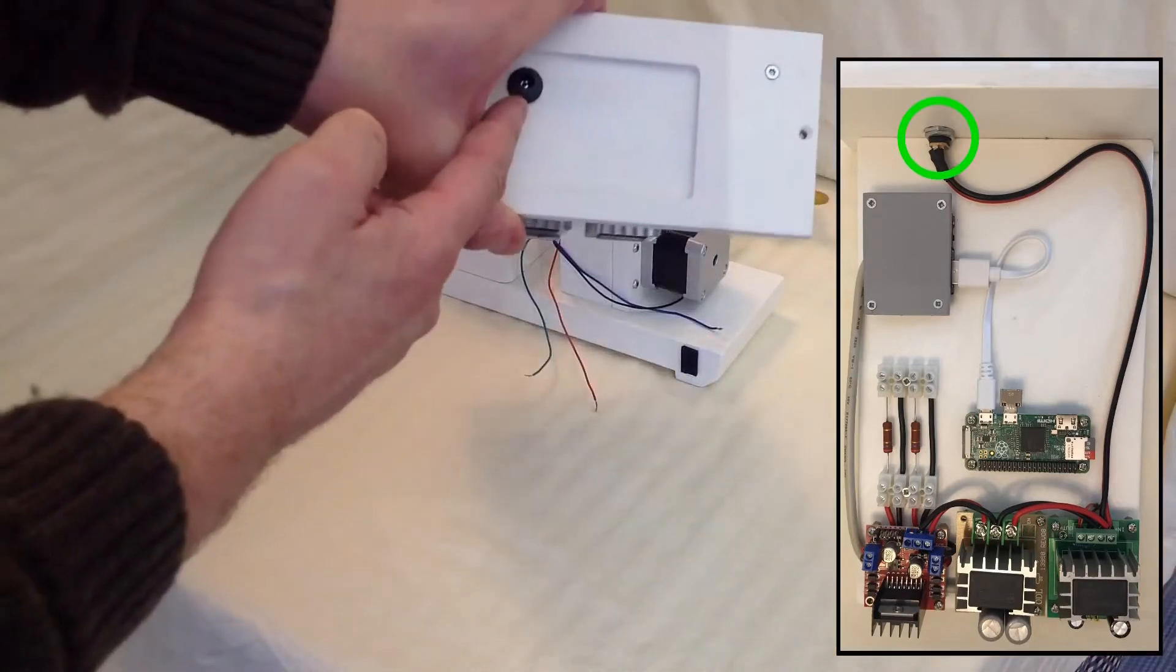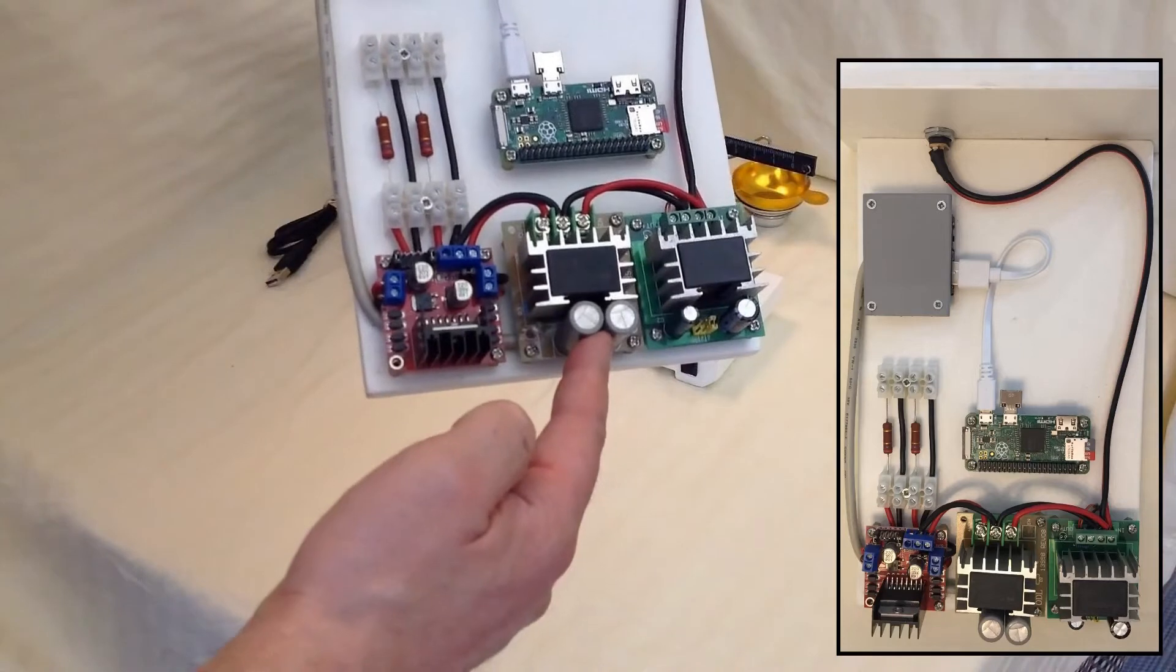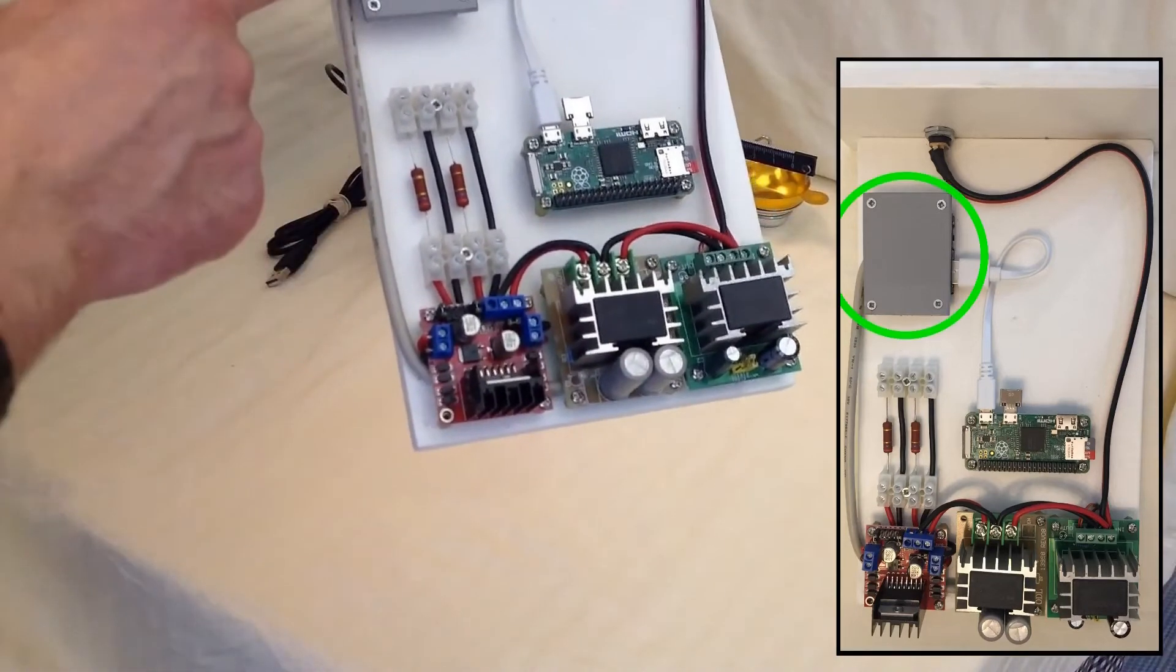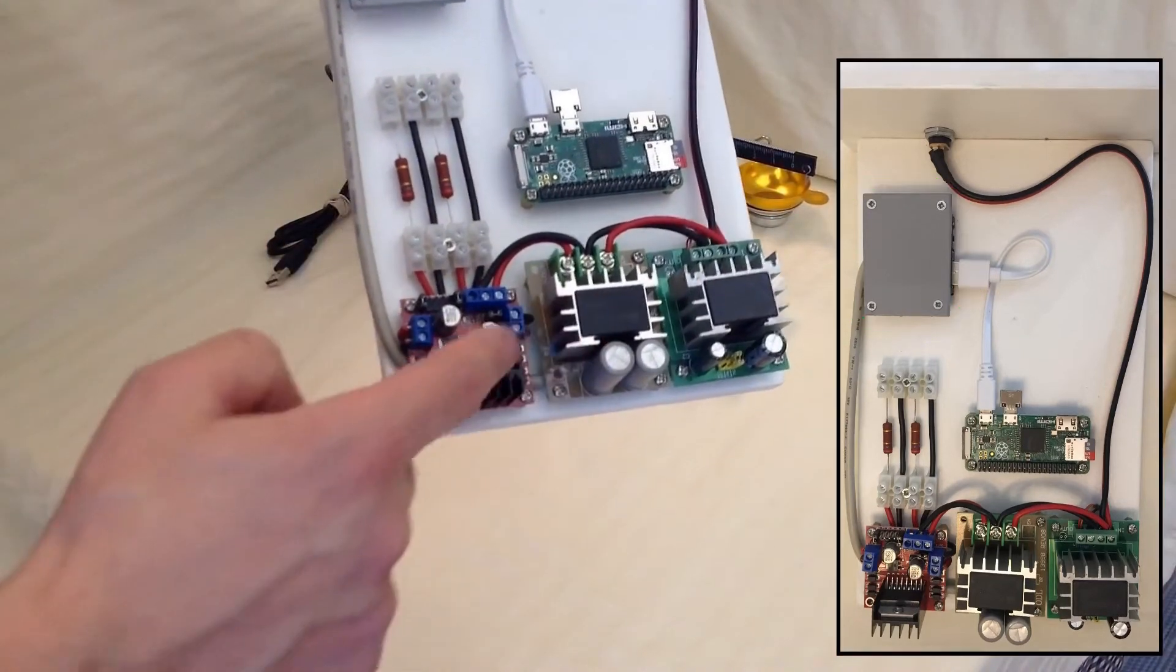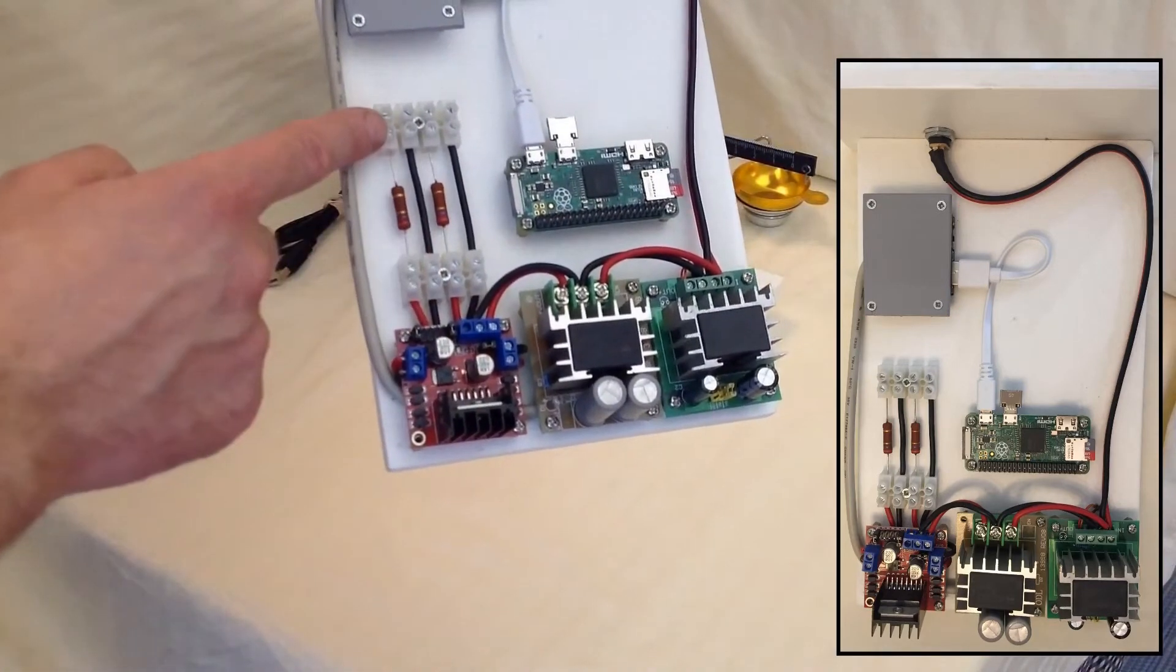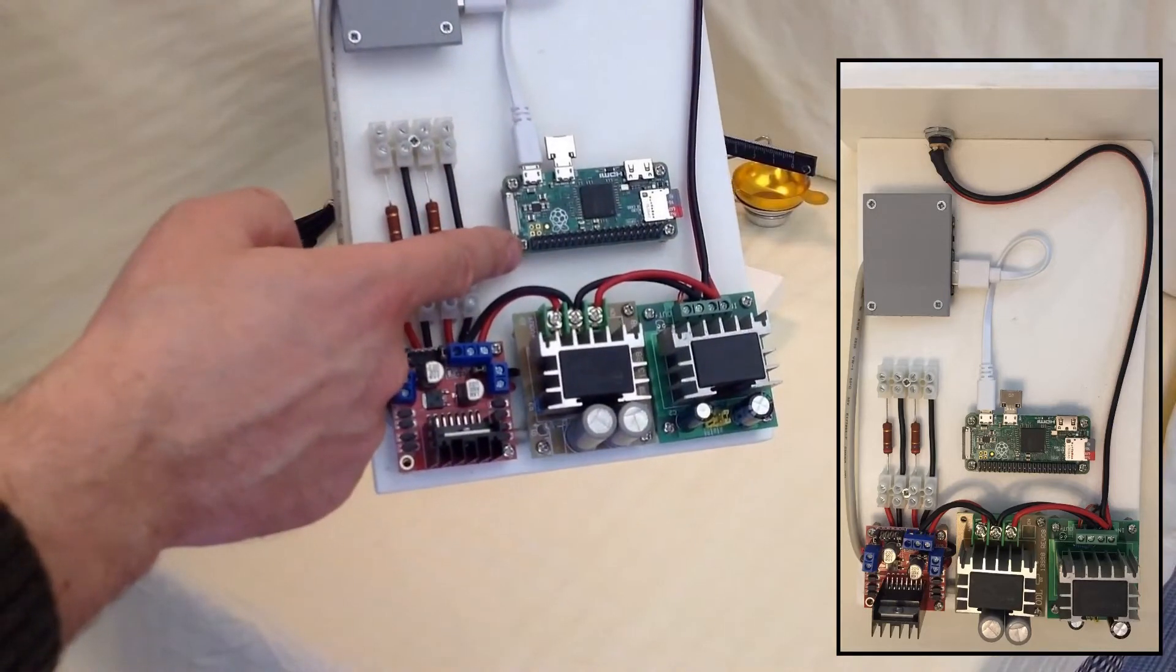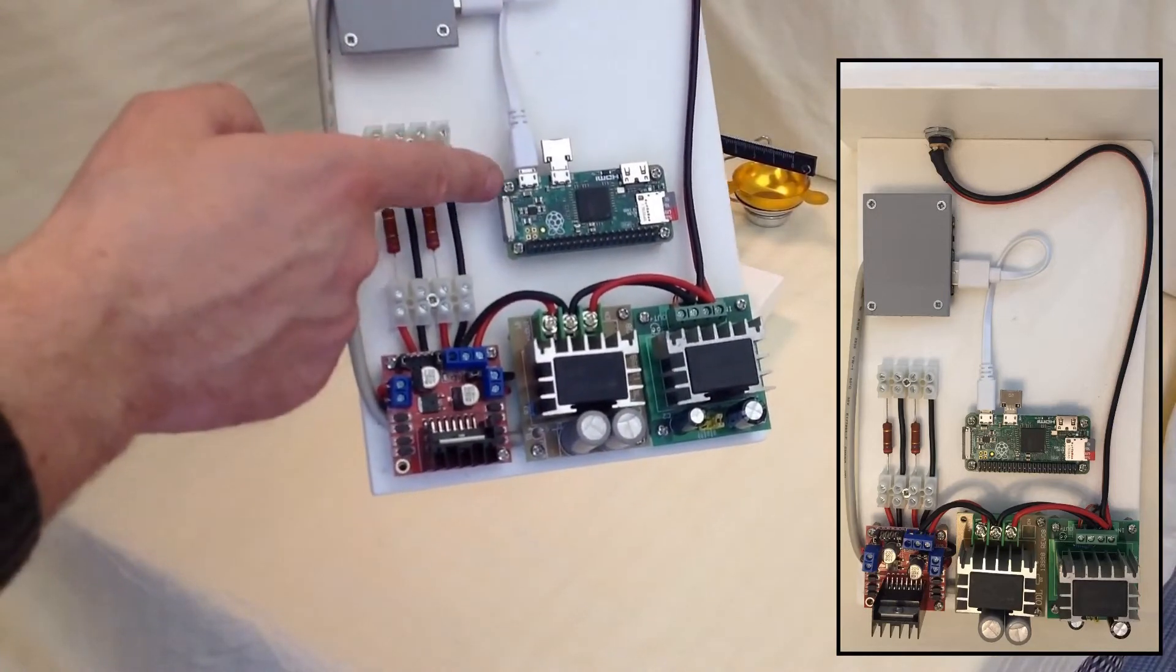The electronics starts off with a power socket which feeds a 5V transformer and a 12V transformer. The 5V is fed to a USB hub and the 12V is fed to the stepper motor driver board. The Raspberry Pi Zero is connected to the USB power hub.